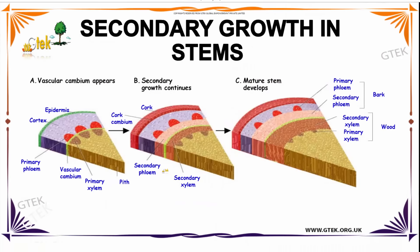Now we are going to see about Secondary Growth instances. You can see three stages. The first one is Vascular Cambium appears, which consists of Primary Xylem, Primary Phloem, Epidermis, Cortex, and Pith.